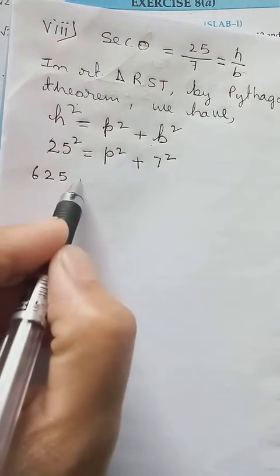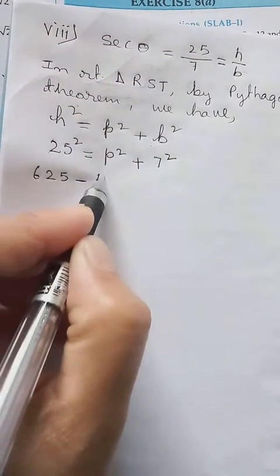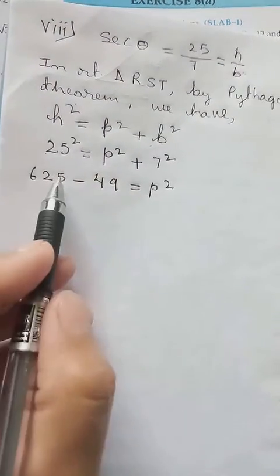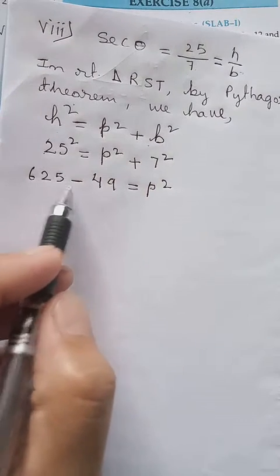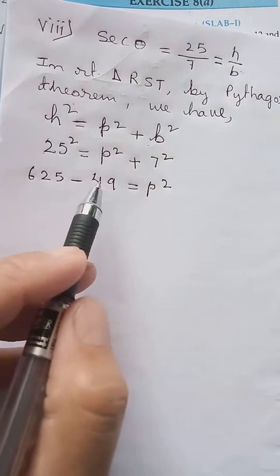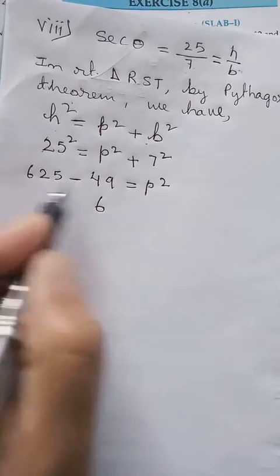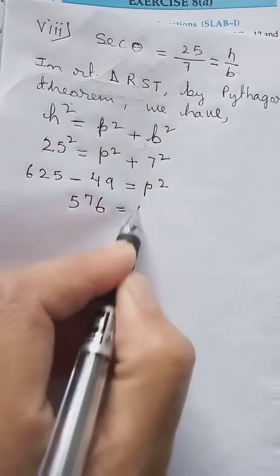We want only P, so let's carry this 7² to the other side. It is plus, when you carry to this side it becomes minus. 7 into 7 you will get 49, it will be equal to P². So now you minus these two. Since you have minus sign, 15 minus 9 you will get 6, 11 minus 4 will be 7. Then 576 equals P².